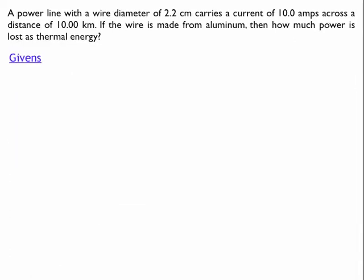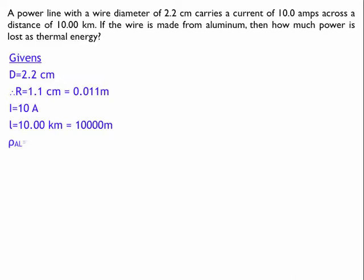So to solve this, I'm going to start by listing the givens. So the diameter of the wire is 2.2 centimeters. That means that the radius of the wire is 1.1 centimeters, or 0.011 meters. The current through the wire is 10 amps, and the distance of the wire, the length of it, is 10 kilometers, which is equal to 10,000 meters.